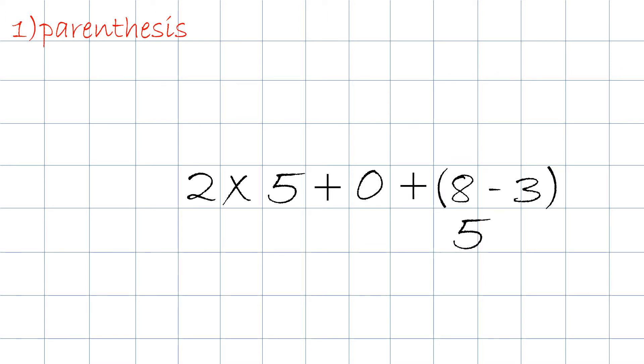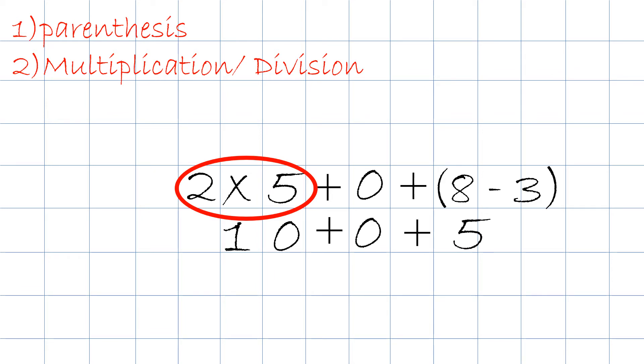The next step is multiplication division from left to right. And here we have 2 times 5. And we know the answer will be 10. So, then we rewrite, so 10 plus 0 plus 5.